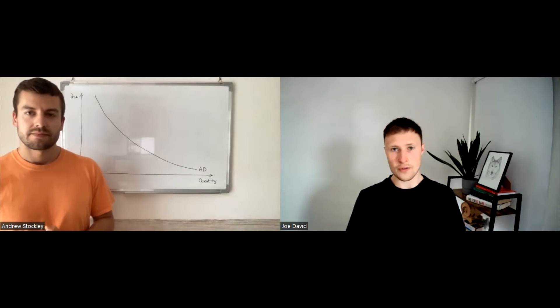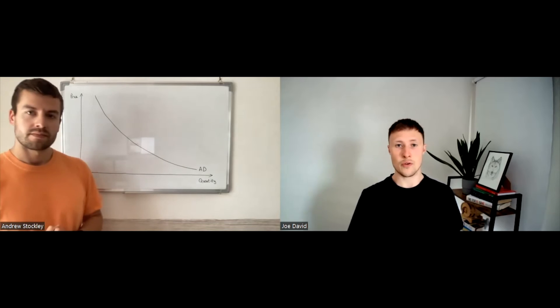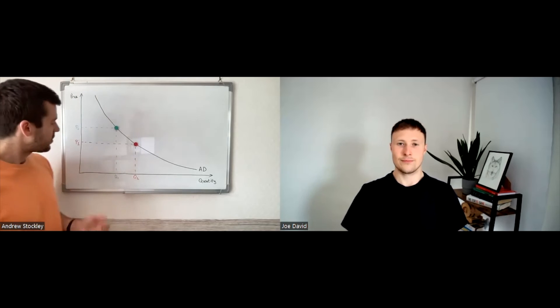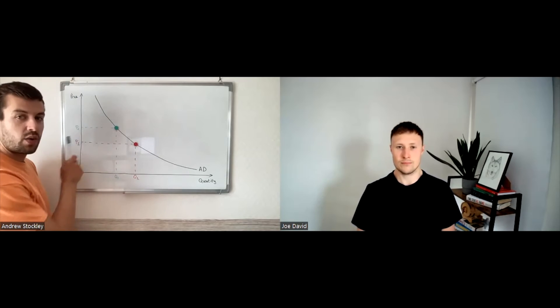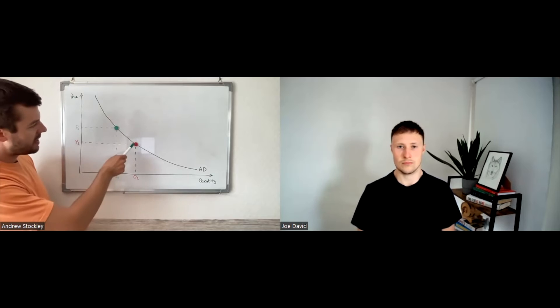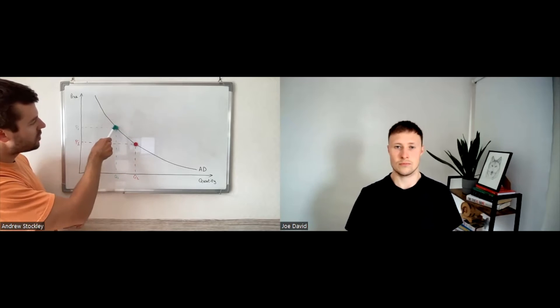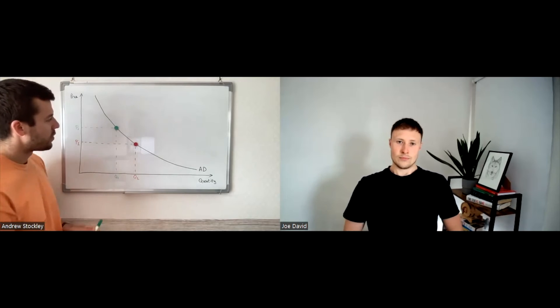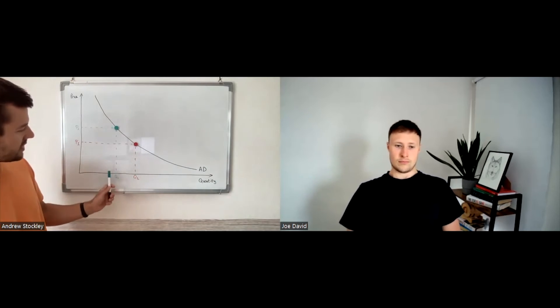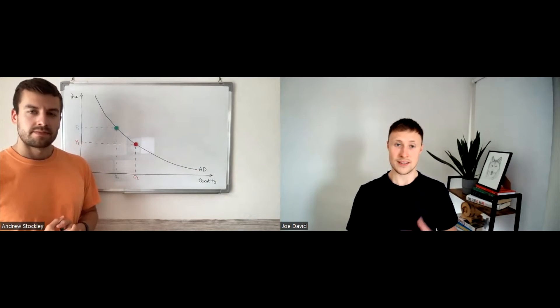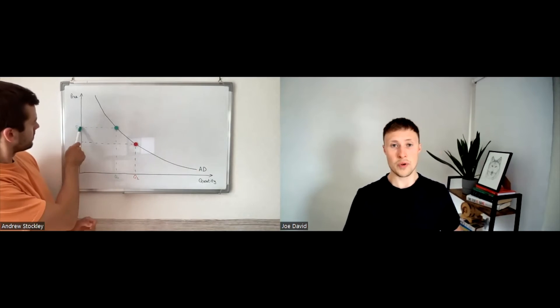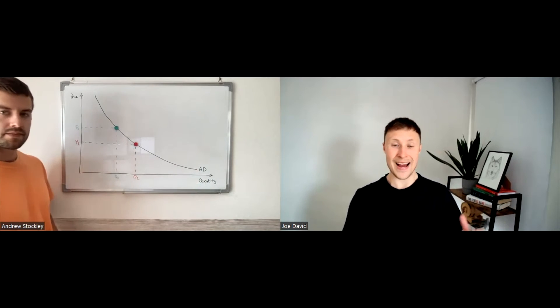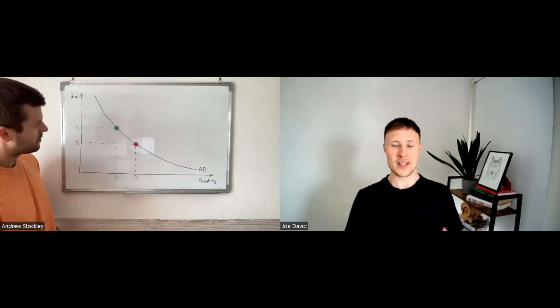So a movement along the aggregate demand curve simply occurs from a change in price. So if there was an increase in price, say from P1 here to P2, there would actually be a movement along the demand curve, no shift, just a movement along up the demand curve, which would cause a decrease in quantity demanded. And conversely, if the price decrease, we would see a movement down the demand curve. So we'd go from P2 back down to P1, and you'll see the quantity increase.